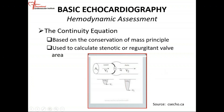If you have a tube like this and it's closed with no leak, the flow here is going to be the same as the flow at the restricted area. Prior to doing the continuity equation, we talked about flow, and flow is equal to the cross-sectional area times velocity or time velocity integral.